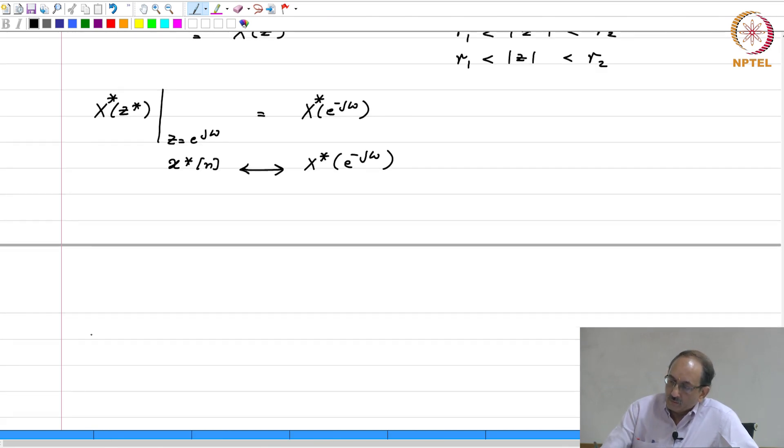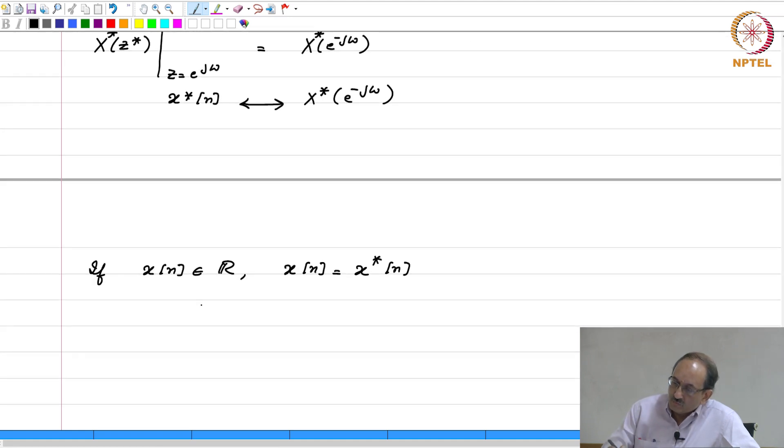And one consequence of this is, if X of n were real valued, then X of n equals X star of n. Therefore, this implies that X of z must be the same as X star of z star.